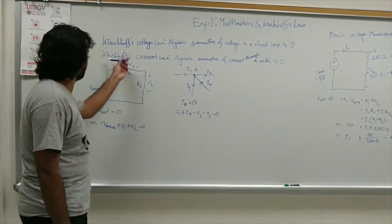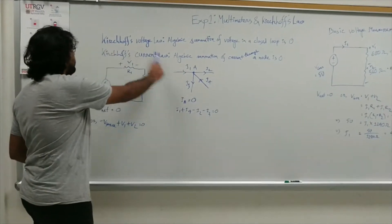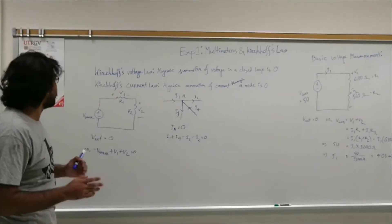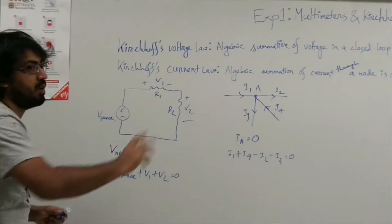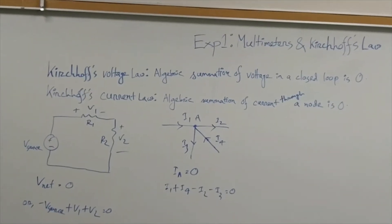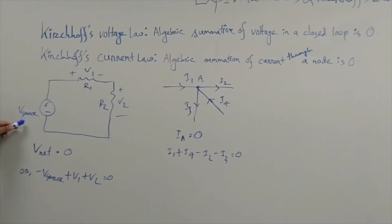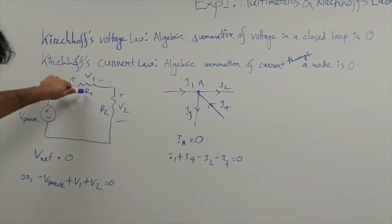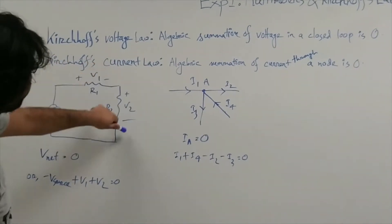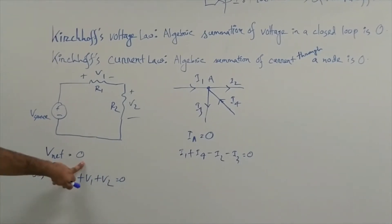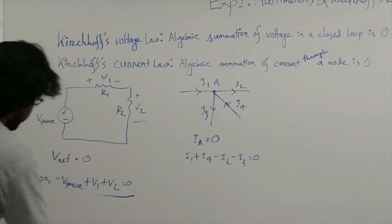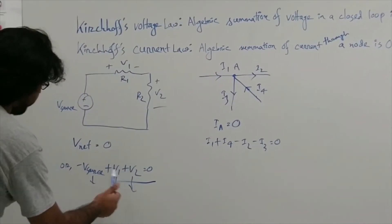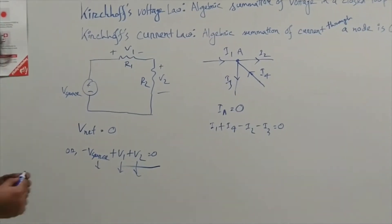Kirchhoff's Voltage Law states that the algebraic summation of voltages in a closed loop is zero. The voltage generated by the source should be dropped across the different components in the loop. In this circuit, the voltage generator is the source, and the voltage dropped across resistors R1 and R2 is V1 and V2. So V1 plus V2 equals V_source.